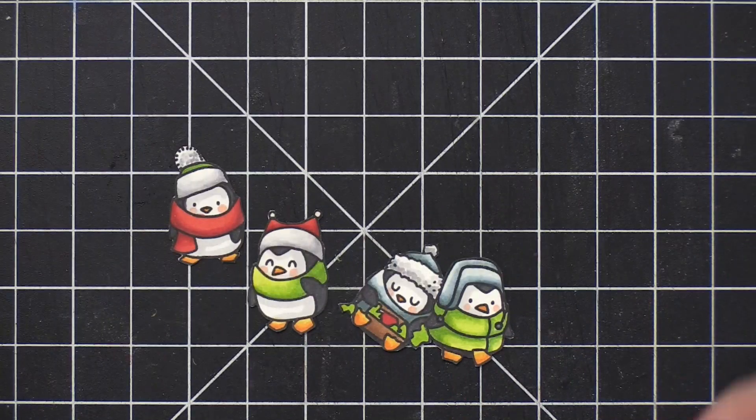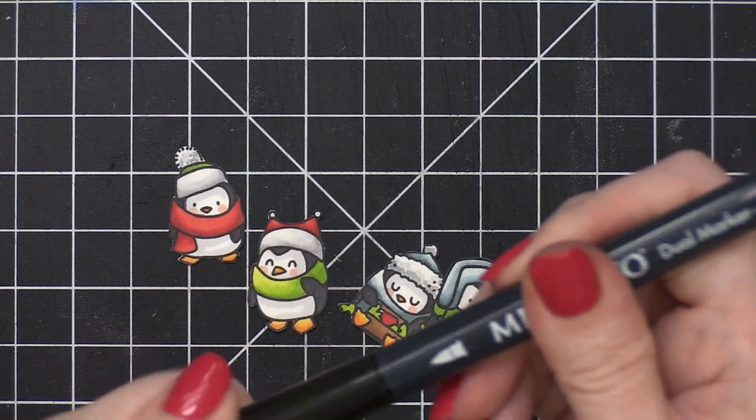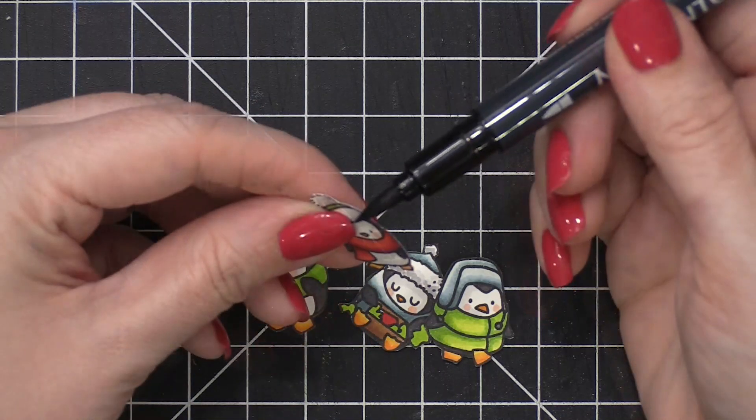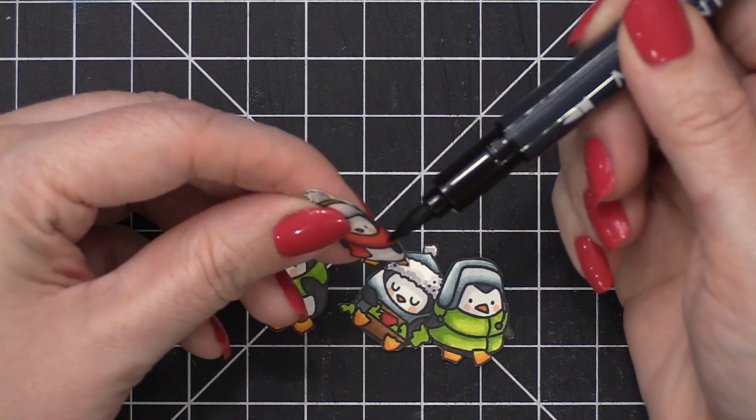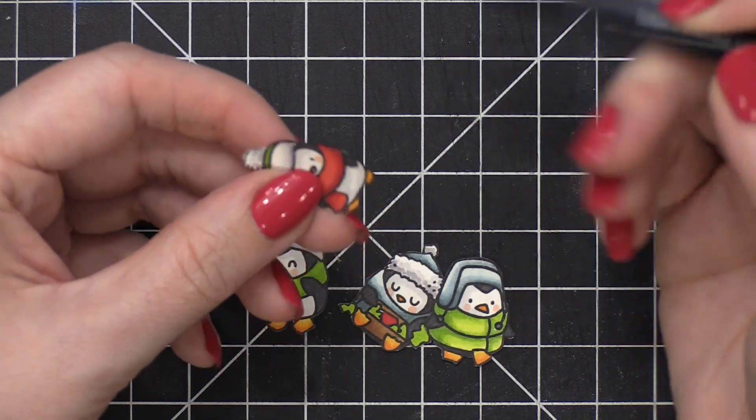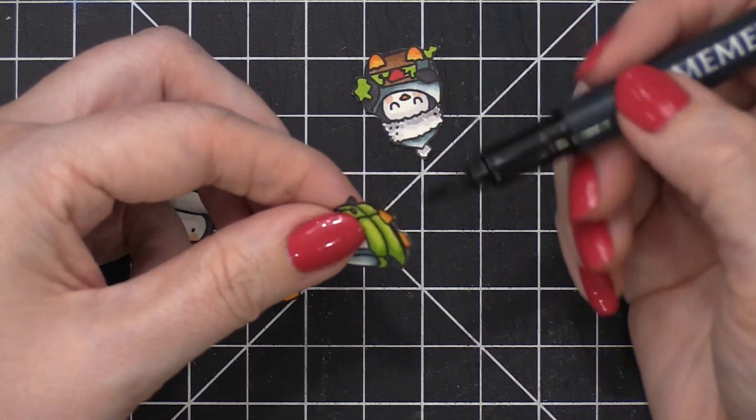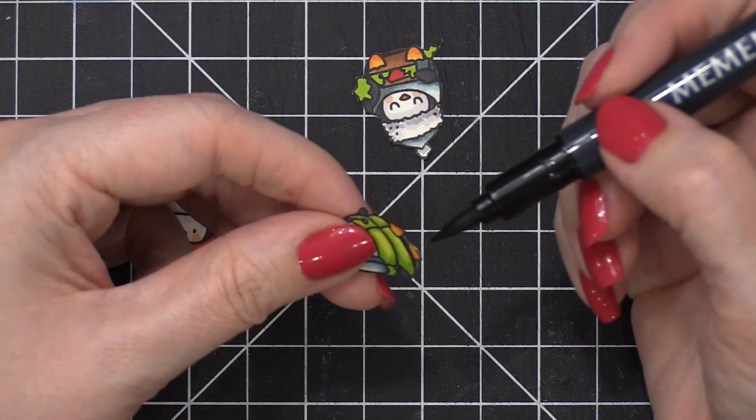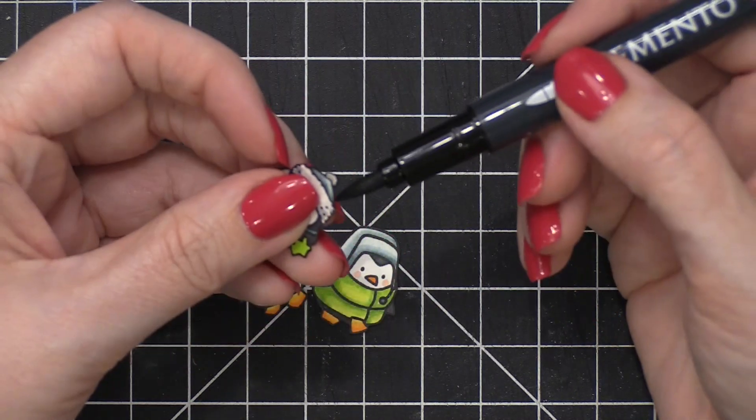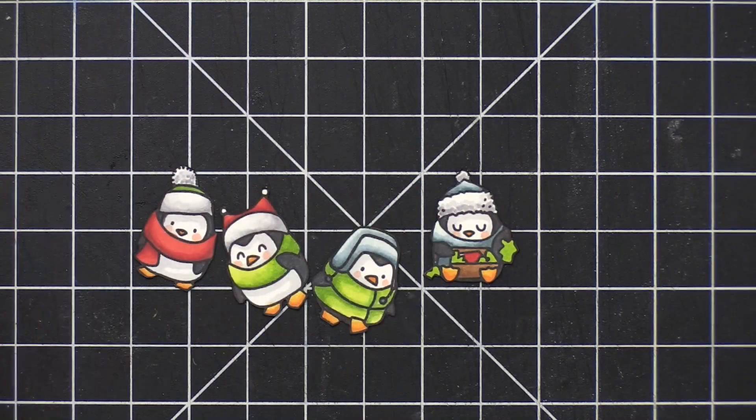I cut out the penguins very close to the lines, and then I took a Memento Tuxedo Black marker. You could use any brush tip marker for this, and I painted the edges of each of these images that I've cut out. This is going to get rid of any white areas that might be remaining after I cut them out, and makes them look just a little bit more finished. I really like to do this on all of these images that I color and then cut out.